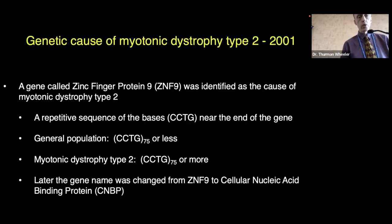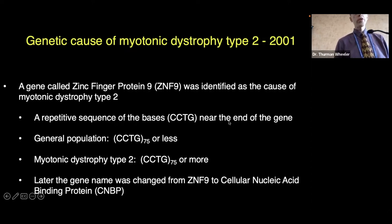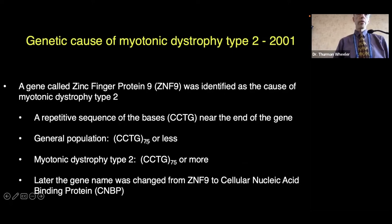In 2001, the genetic cause for type 2 myotonic dystrophy was reported. It was in a gene called zinc finger protein 9, or ZNF9. This was also a repetitive sequence of bases — CCTG — a tetranucleotide repeat located in the middle of the gene. In the general population, this repeat is less than 75; in DM2, there are more than 75. Later, ZNF9 was renamed to cellular nucleic acid binding protein, abbreviated CNBP, which is what it's known as today.